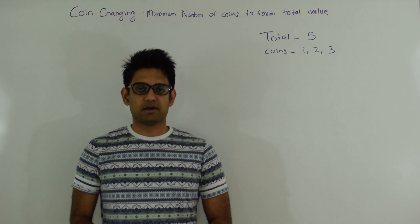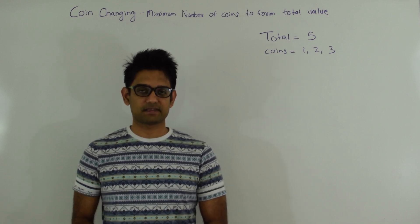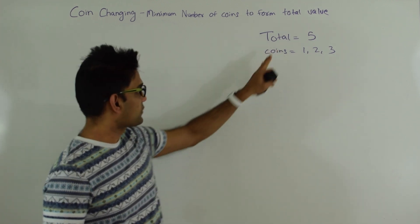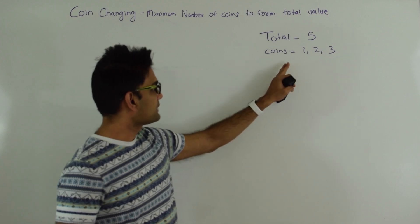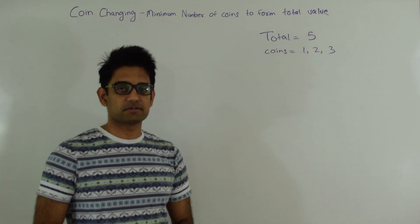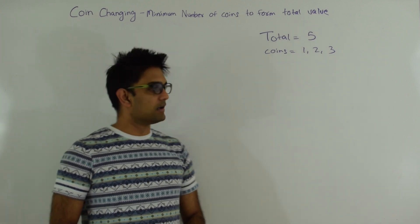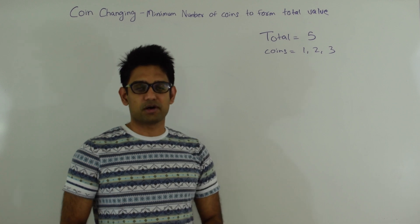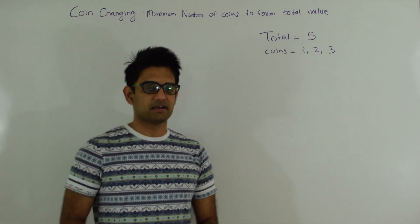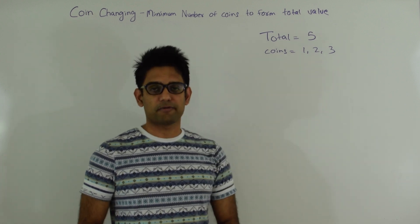In top-down dynamic programming we solve the question recursively and then apply memoization where repetition of work is happening. For this video I'm going to take a simple example where my total is 5 and my coins have denominations 1, 2 and 3. Remember we have infinite supply of these coins. I'm taking a coin of value 1 so that we can always get an answer — without it, there's a possibility of no solution, which introduces edge cases.